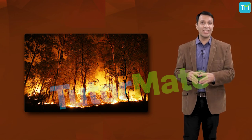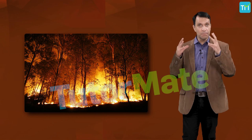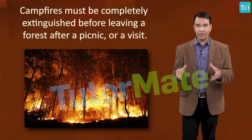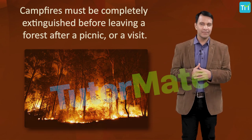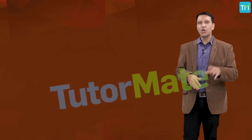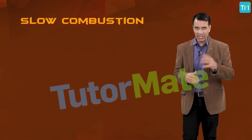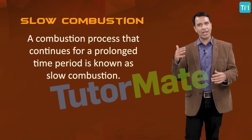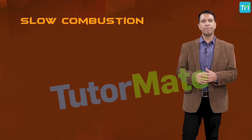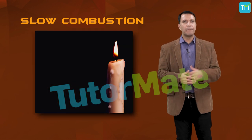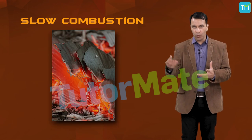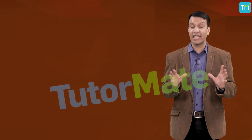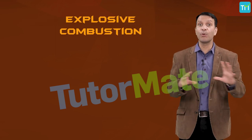Many times forest fires are also due to the carelessness of us humans, so it is important to remember that camp fires must be completely extinguished before leaving a forest after a picnic or a visit. Now let's move on to the third type, which is slow combustion. As the name says, a combustion process that continues for a prolonged time period is known as slow combustion — for example, burning of wood, burning of a candle, burning of a pile of waste paper.